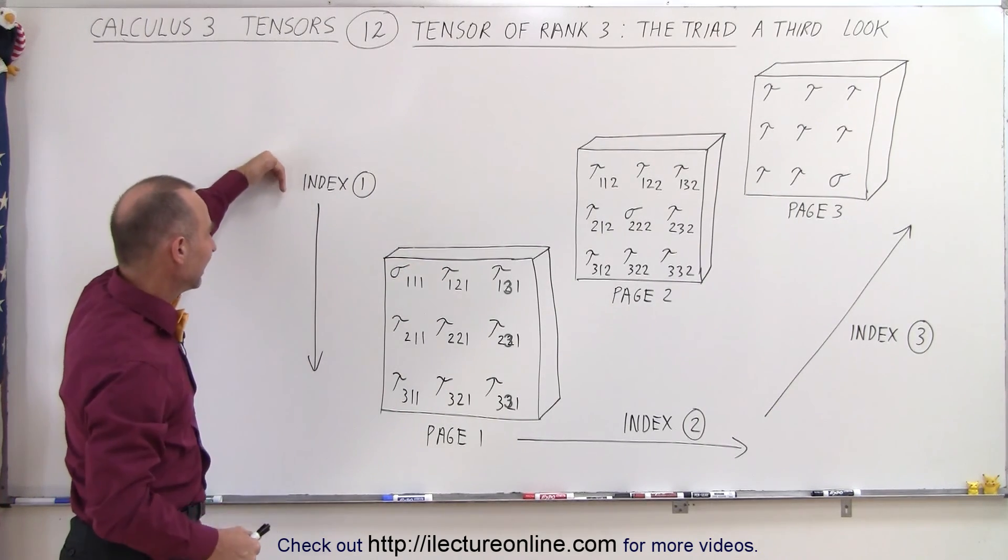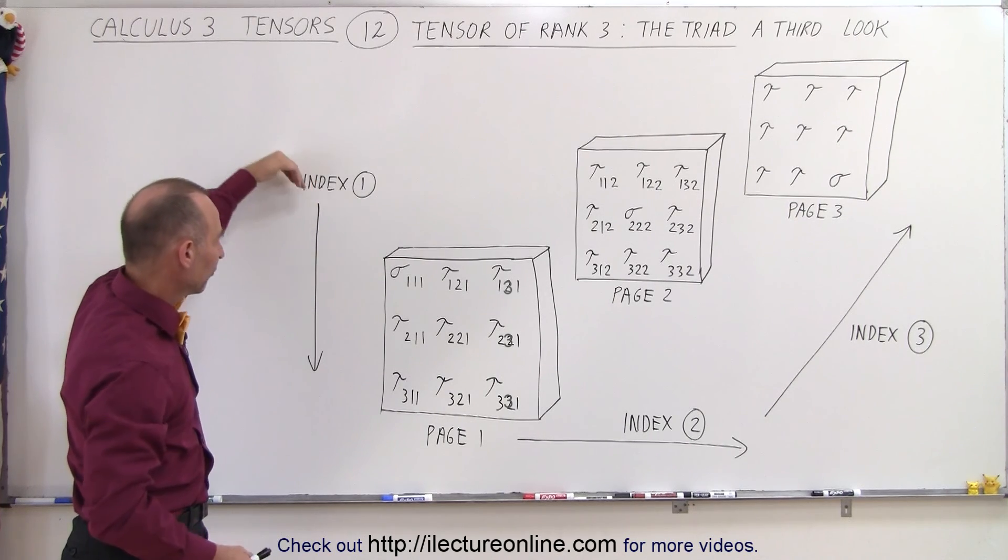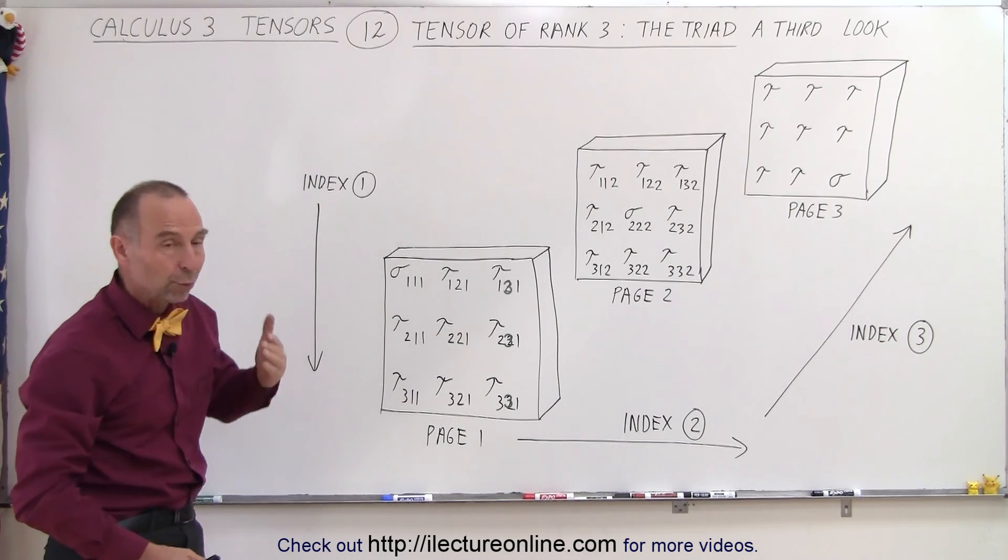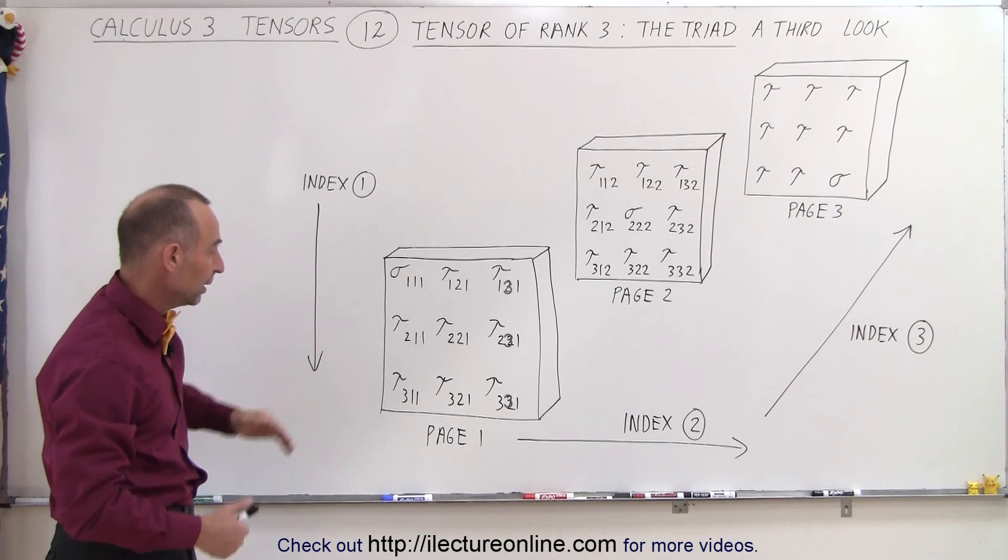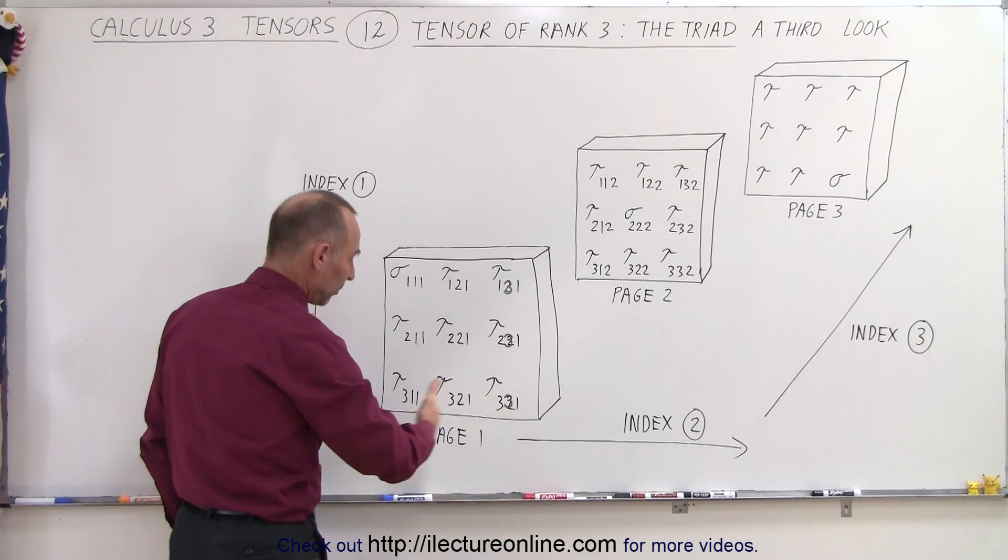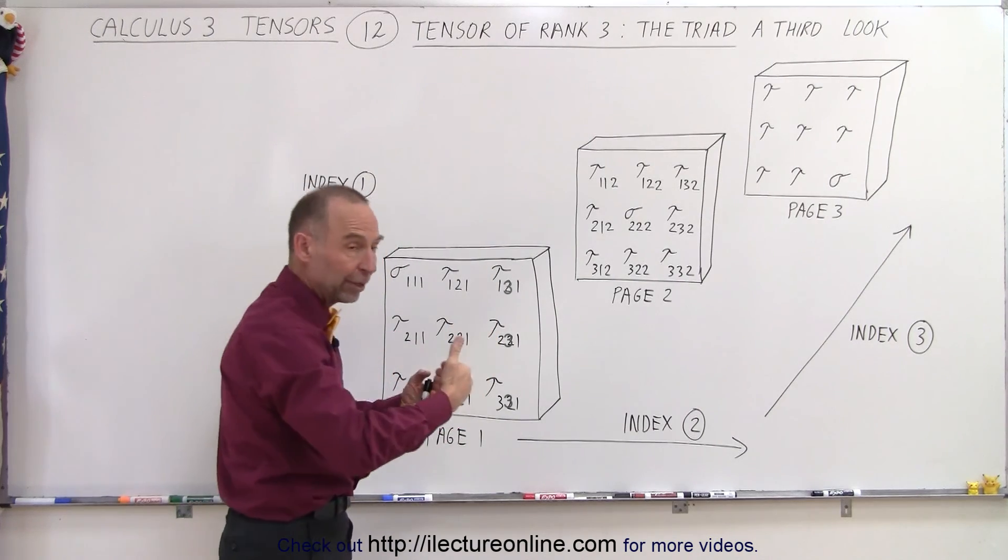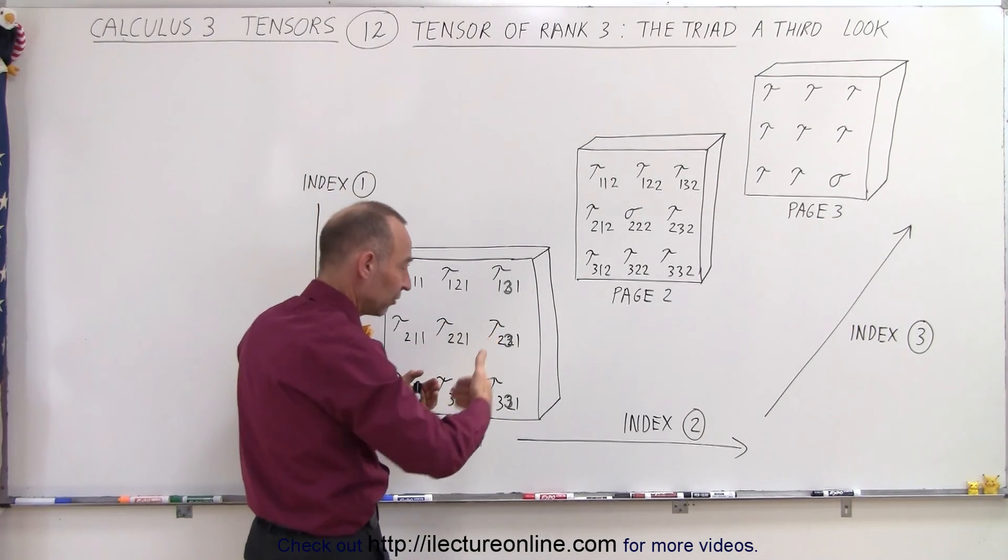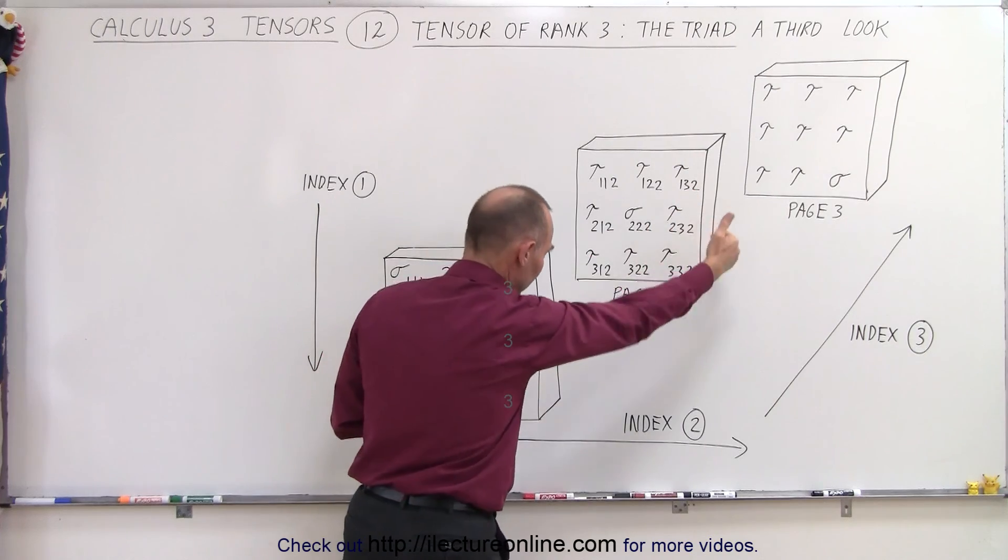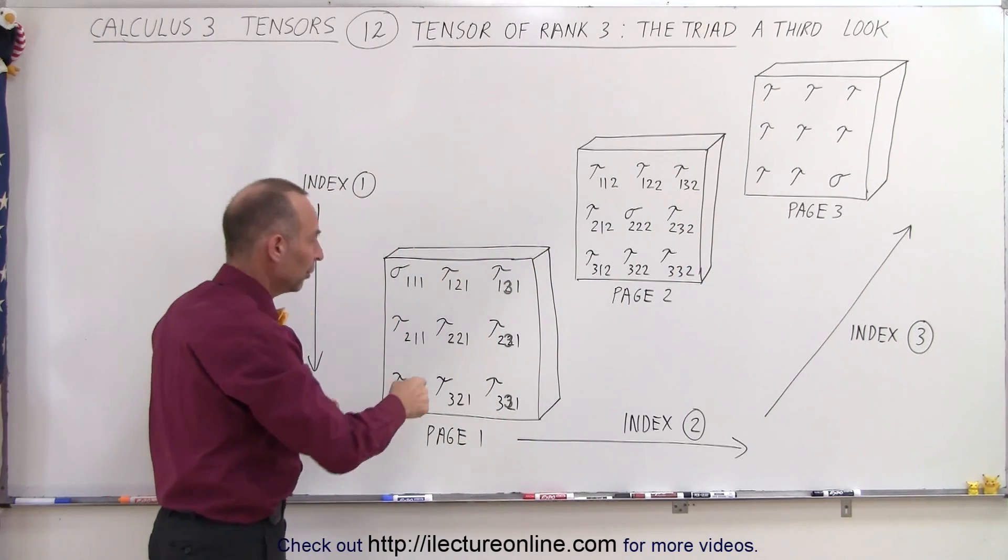First of all, the first index from top to bottom represents the rows - row one, row two, row three. The second index from left to right represents the columns - column one, column two, column three. Then the third index represents front to back - page one, page two, page three. So the third index should all be ones over here, all twos over there, and then all threes over there.